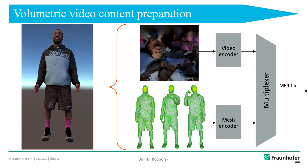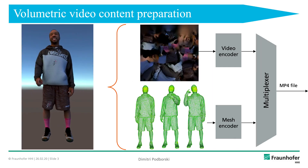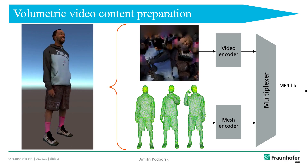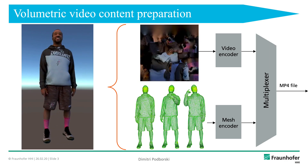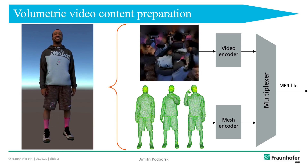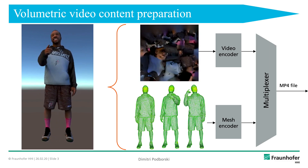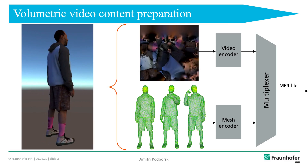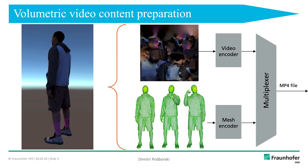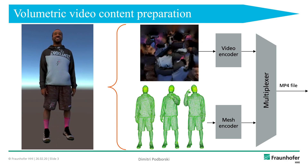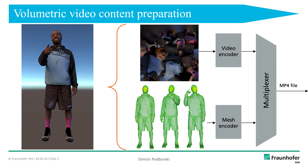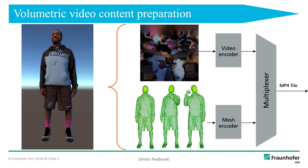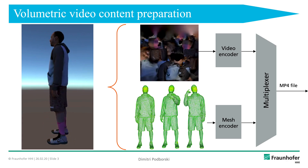In order to prepare the content, we take those textures and encode them as a video using, for example, an H.264 video encoder. We do the same for the sequence of meshes, where we use a mesh encoder to compress the data. We then have two elementary streams which we multiplex together into a single MP4 file with two tracks — one for video textures and one for meshes — and of course there might be a third track representing the audio of that sequence as well.